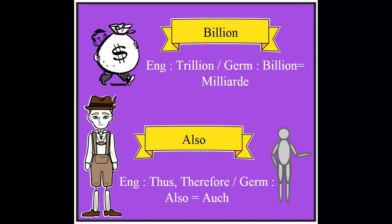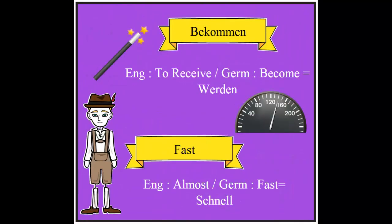'Billion' — billion in German is a trillion, but the US billion is actually 'Milliarde.' Next word: 'also.' The English translation for 'also' is 'auch,' but the German word 'also' actually means 'thus' or 'therefore.'